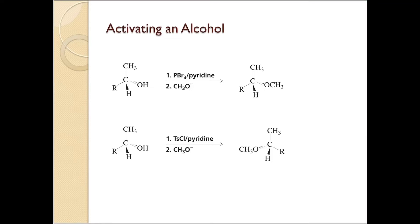We have talked about different methods to activate an alcohol — we have used PBr3, PCl3, or thionyl chloride, or we can use any of the sulfonate chlorides to convert it into sulfonate esters. Once it is converted into an alcohol halide or sulfonate ester, it can be reacted with any nucleophile to convert it into the compound that we want.